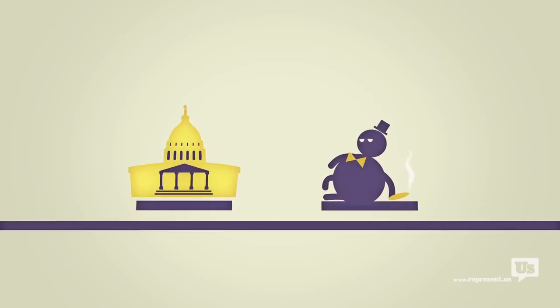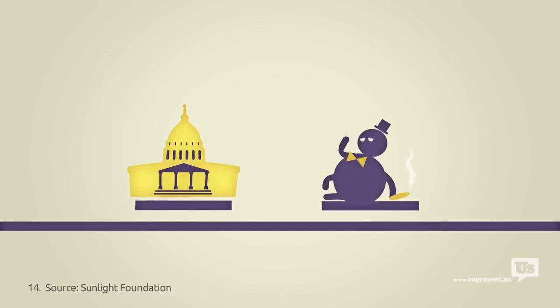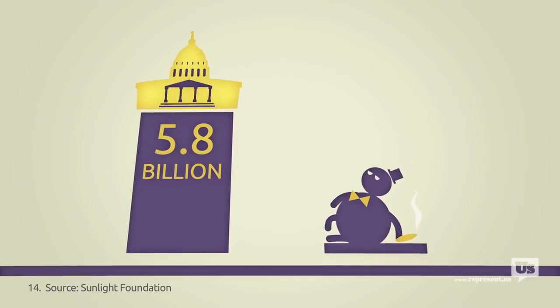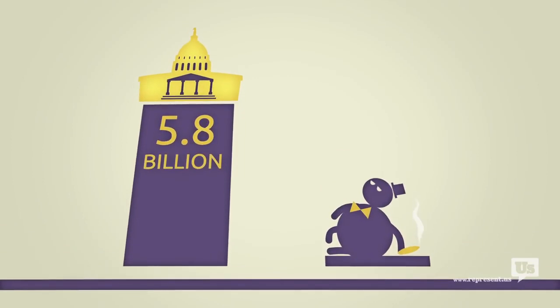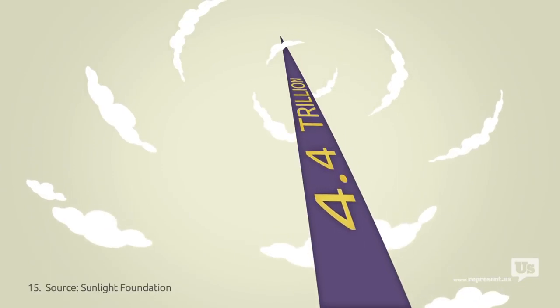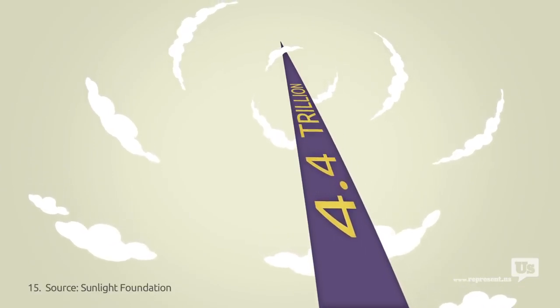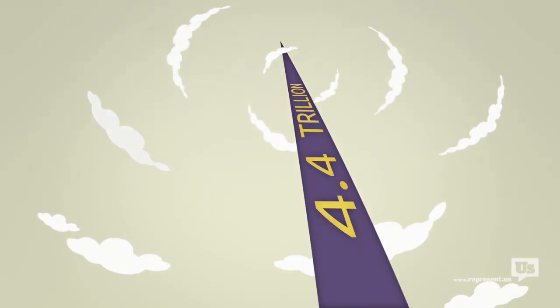In the last five years alone the 200 most politically active companies in the United States spent 5.8 billion dollars influencing your government. Those same companies got 4.4 trillion in taxpayer support. And that's trillion. With a T. And that's just the top 200 companies.